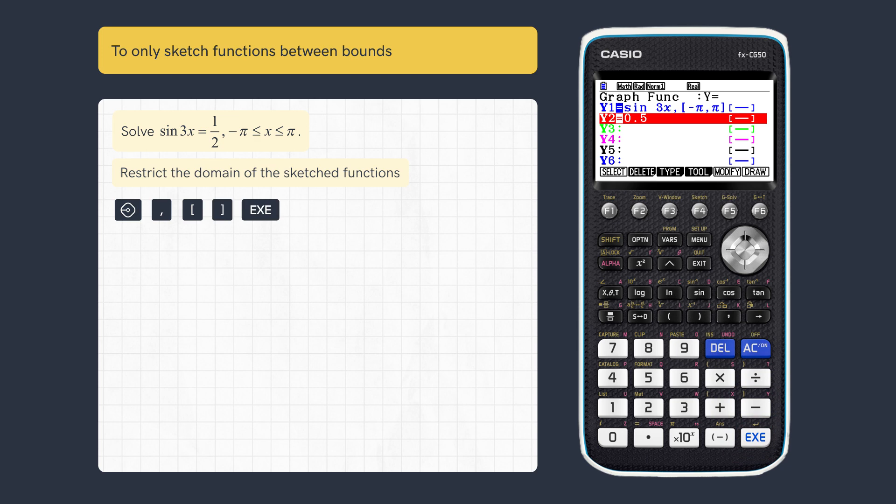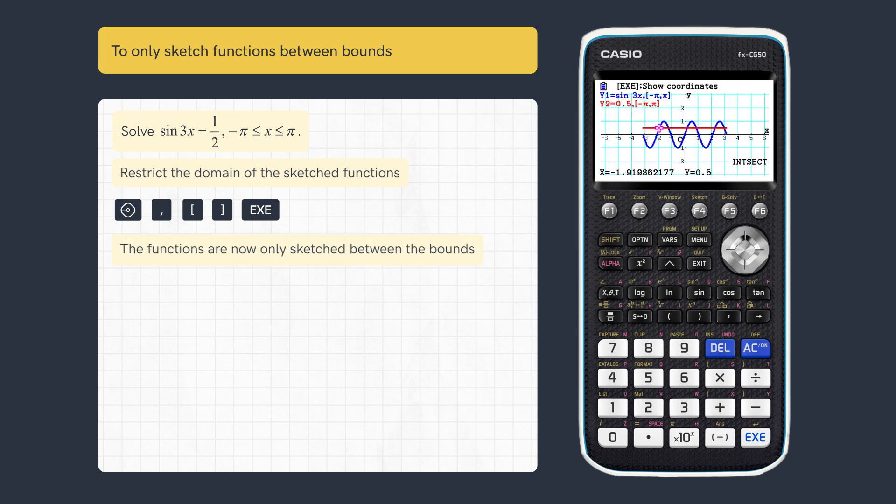The same restriction can also be applied to the second function. When sketched, it is now easy to solve for the correct number of intersections.